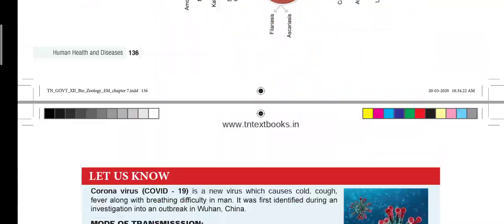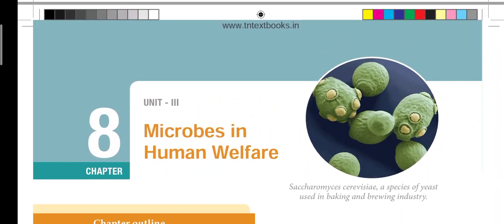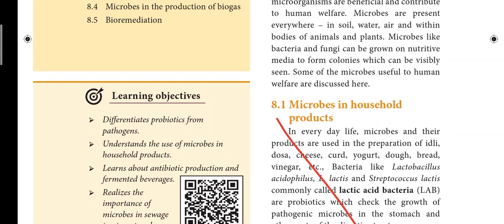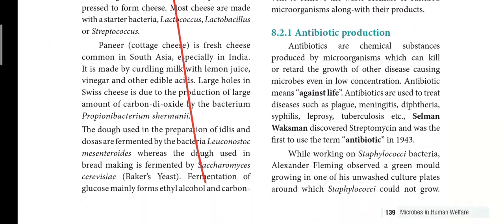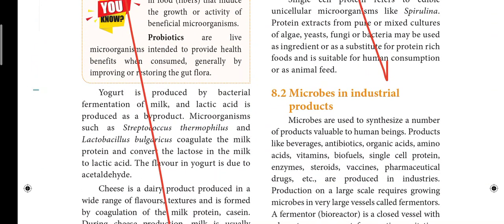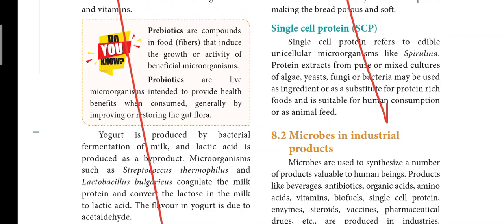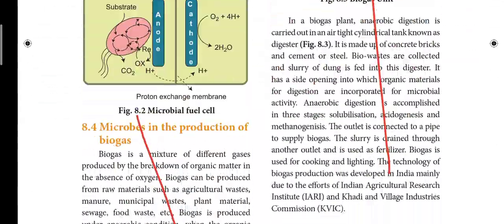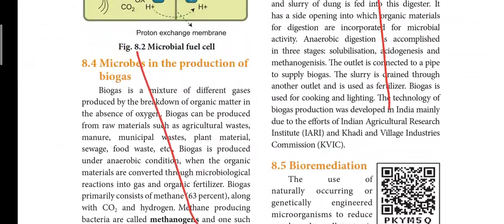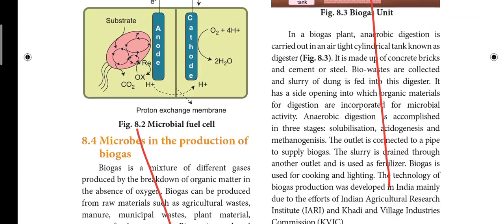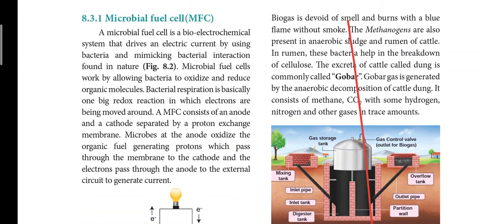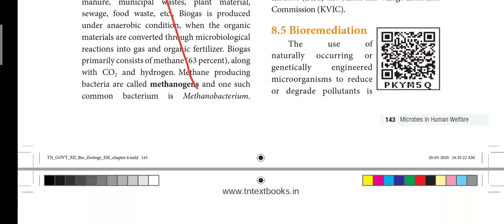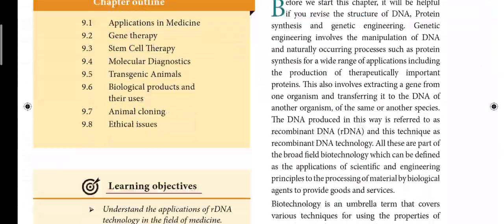Next page is 138. The 8th lesson is Microbes in Human Health. Heading 8.1 — Microbes in Household Products — that heading is struck out. Next page 139: left side is full strikeout; right side covers Microbes in Industrial Products, Single Cell Protein — that heading is struck out. Next page 143, heading 8.4 — Microbes in the Production of Biogas — that heading is struck out. Right side is Bio-remediation — that paragraph is struck out. This is the 8th lesson.